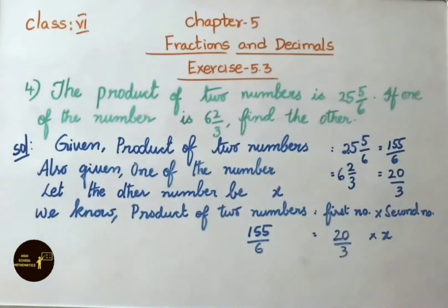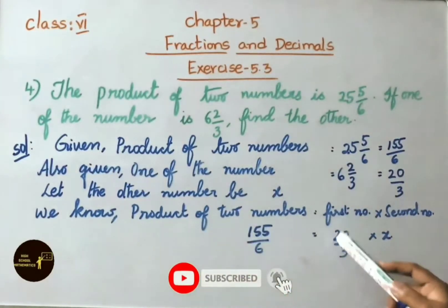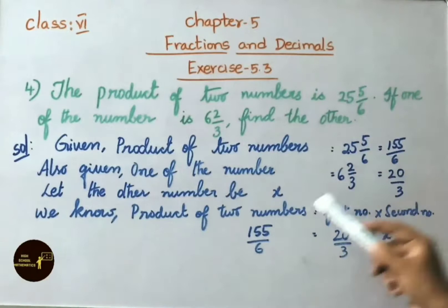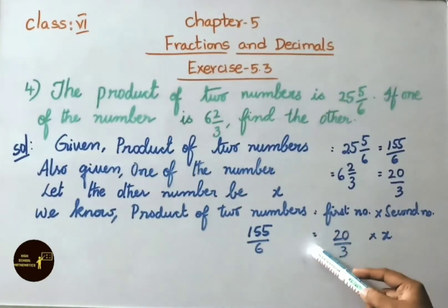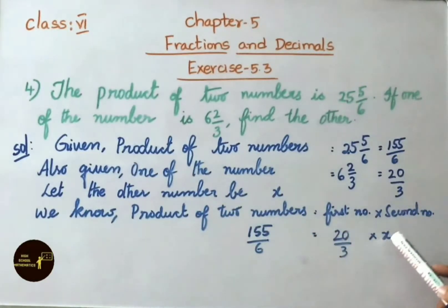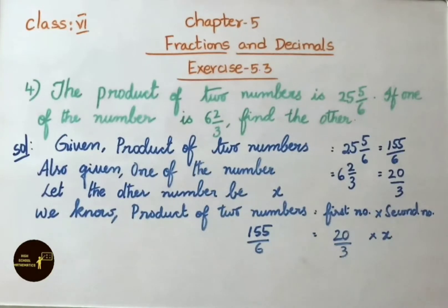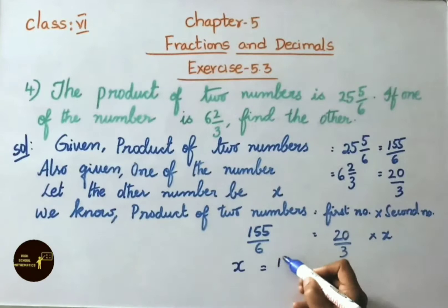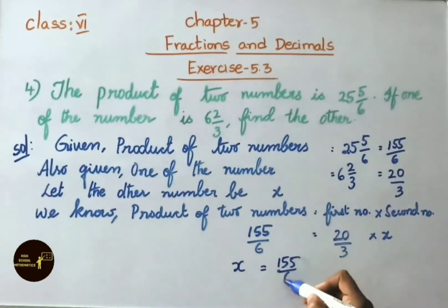Let the other number be x. Now we know product of two numbers equals first number into second number. Product of two numbers is 155/6, that equals first number 20/3 into the other number x. Now we have to find the x value, that is the unknown value. So x equals 155/6 divided by 20/3.